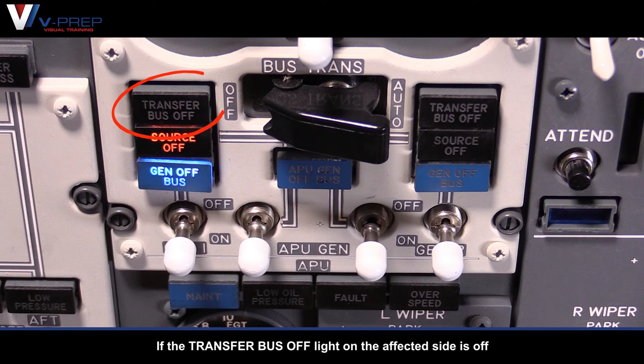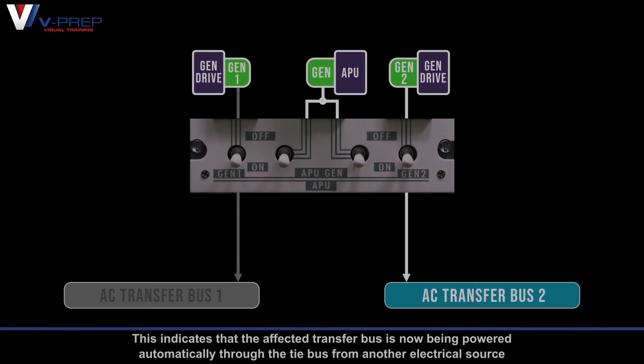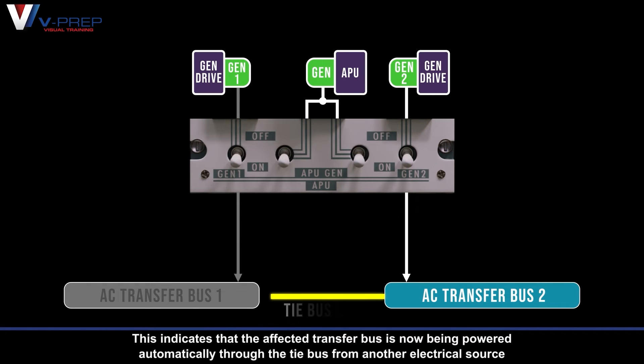If the transfer bus off-light on the affected side is off, this indicates that the affected transfer bus is now being powered automatically through the TIE bus from another electrical source.